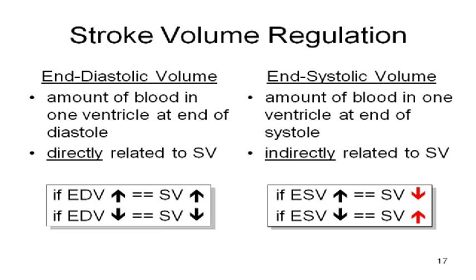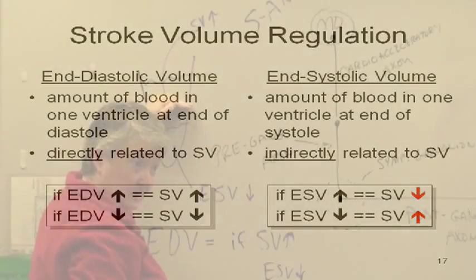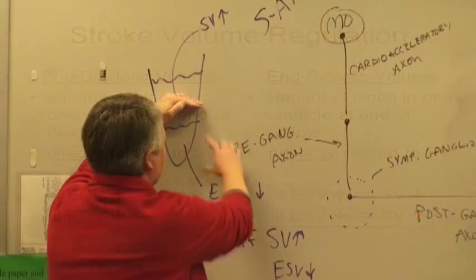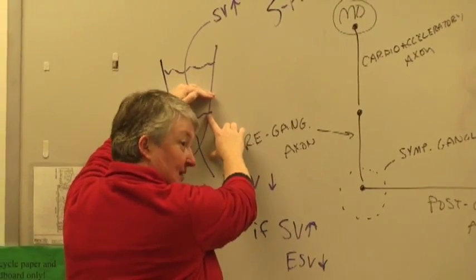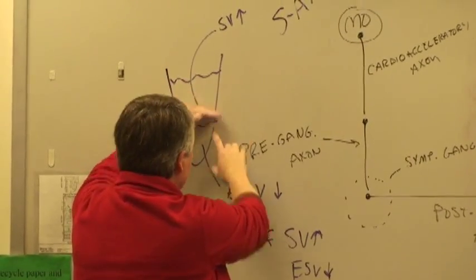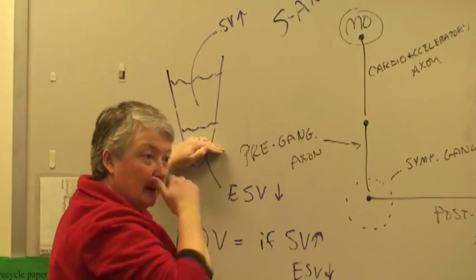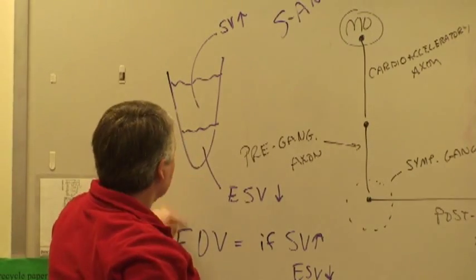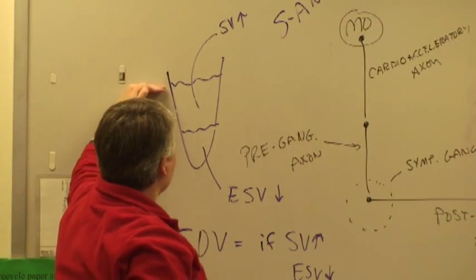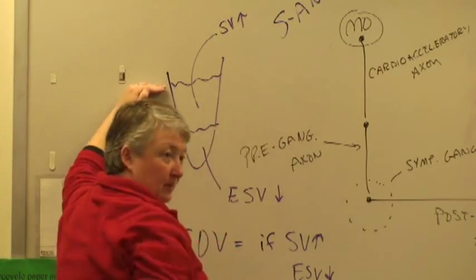We say that the end systolic volume is indirectly related to stroke volume. Because if ESV is big, that stroke volume must be smaller. If ESV is small, that means a lot of the blood got pumped out. With end diastolic volume, the more blood that's here, the more you can pump out.